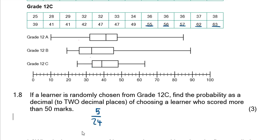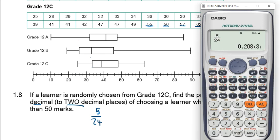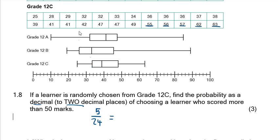We were asked to write this as a decimal to two decimal places. Going to the calculator, 5 divided by 24 gives a fraction. We can use the S-to-D button to convert it to a decimal, and written to two decimal places that gives us 0.21.